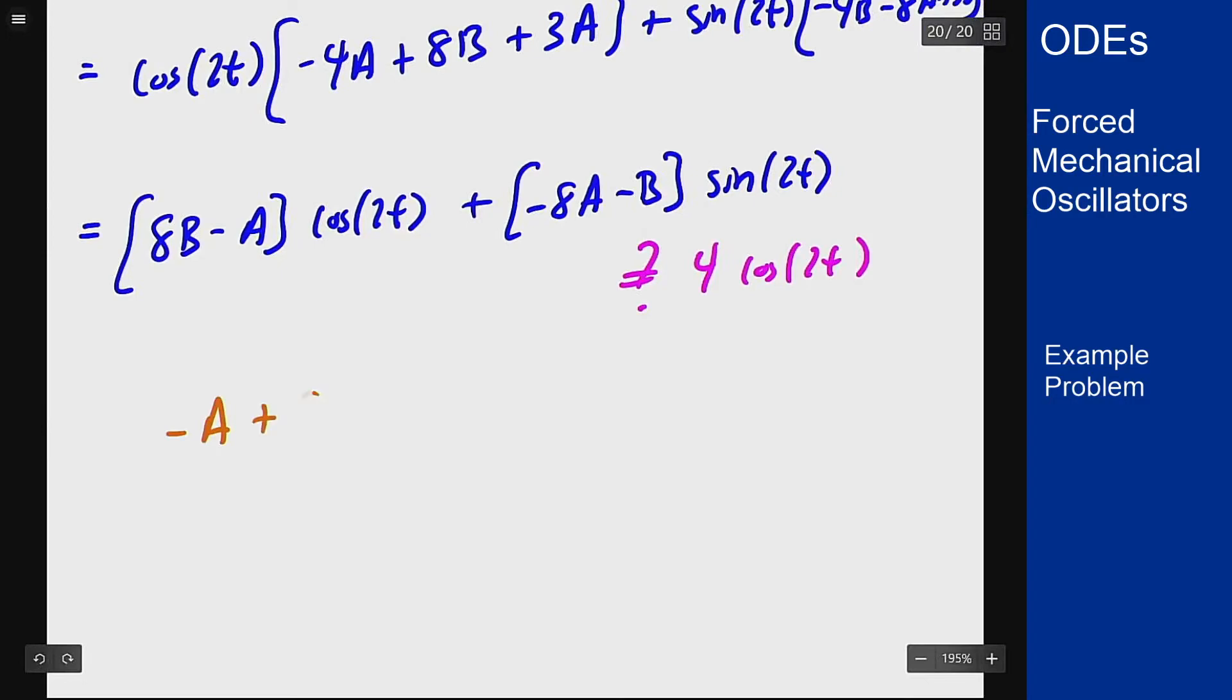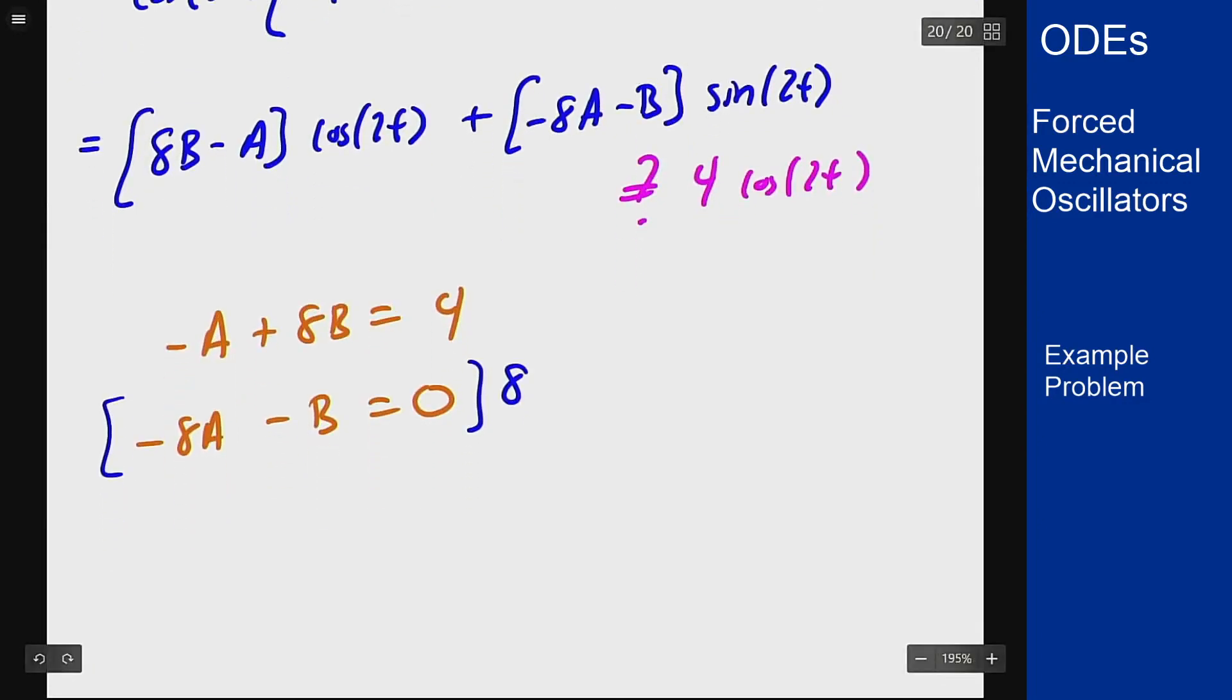Negative a plus 8b equals 4 and negative 8a minus b equals 0. To solve this I can multiply the second equation by 8 and add down to cancel the b's. That will give me negative 65a equals 4 or a equals negative 4 over 65. Plugging that into the second equation tells me that b equals 32 over 65.